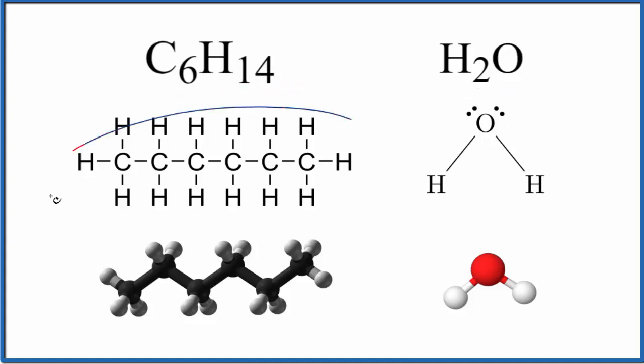If we look at the structures, this here is our structural formula for hexane. We have 1, 2, 3, 4, 5, 6 of these carbons, and then if you count the hydrogens, 14 of those.